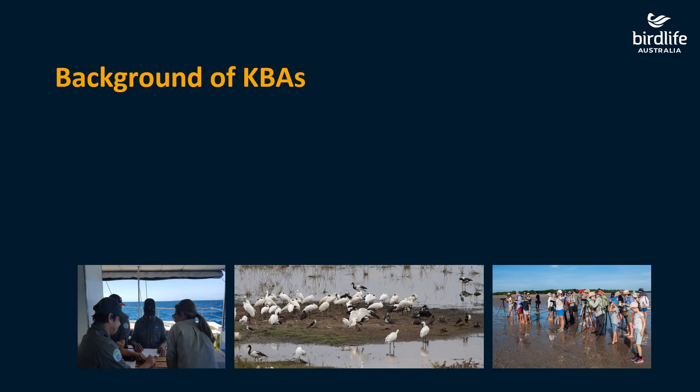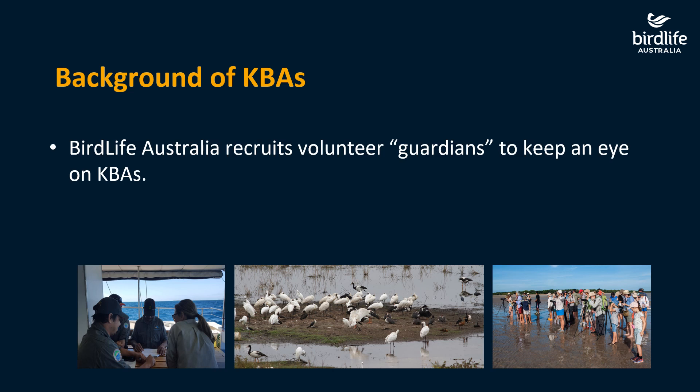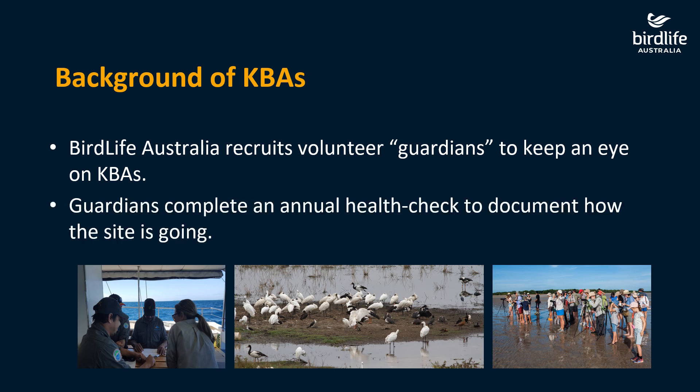A bit of background on the Key Biodiversity Area Program: we recruit volunteer guardians to keep an eye on our key biodiversity areas. These guardians complete an annual health check to document how the site is going. Usually we ask people to complete this health check in April, going through a series of questions about the state of threatened species within the KBA, how threats might be tracking, any other pressures we need to know about, and what other activities are happening — whether by BirdLife volunteers, ranger groups, or government parks and wildlife staff.